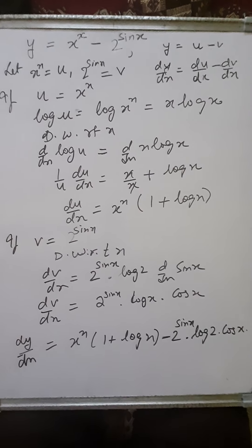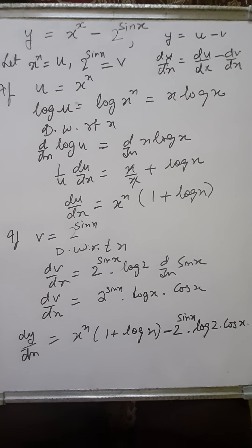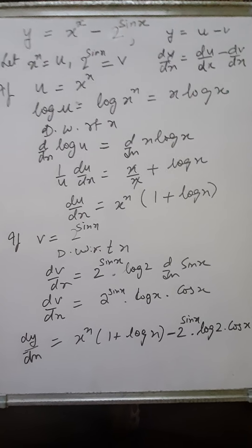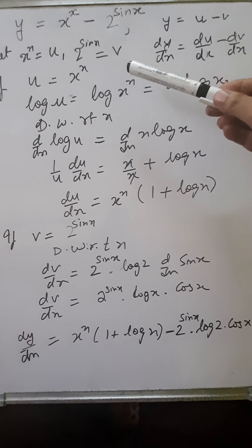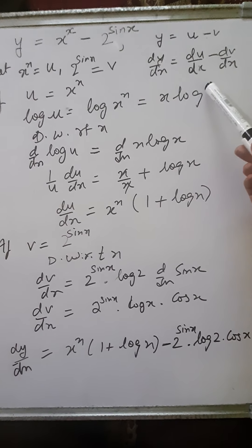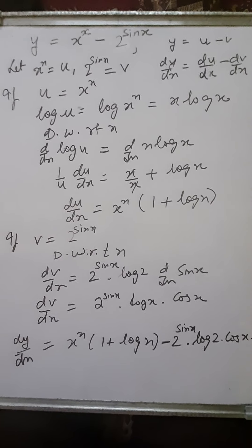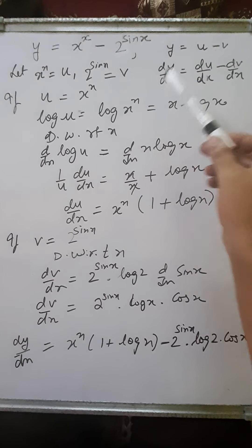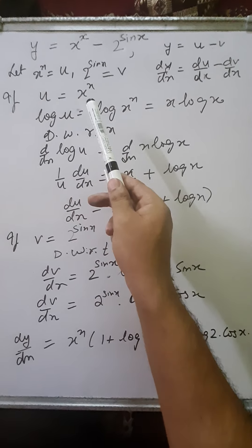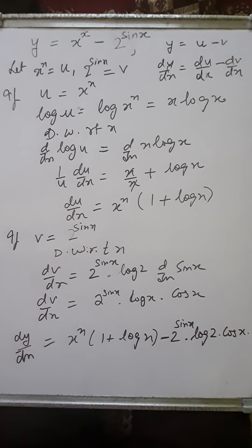Let's discuss another sum. The function is given as y equals x^x minus 2^(sin x). There are two functions with a minus sign in between. To handle this, we assume x^x as u and 2^(sin x) as v, so y equals u minus v. Therefore dy/dx equals du/dx minus dv/dx. We'll calculate du/dx and dv/dx separately and then substitute. Since u equals x^x, taking log: log u equals log x^x, and by the property log m^n = n log m, it becomes x log x.